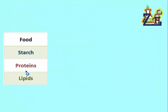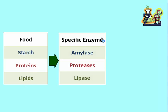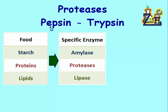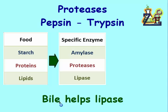As a conclusion or summary for this activity, we have the three foods that we are talking about from the beginning of the chapter: starch, proteins, and lipids. They are transformed by specific enzymes. Starch has a specific enzyme, which is amylase. Proteins are digested by proteases, such as, for example, pepsin and trypsin. And lipids are digested by lipase with the help, of course, of bile.